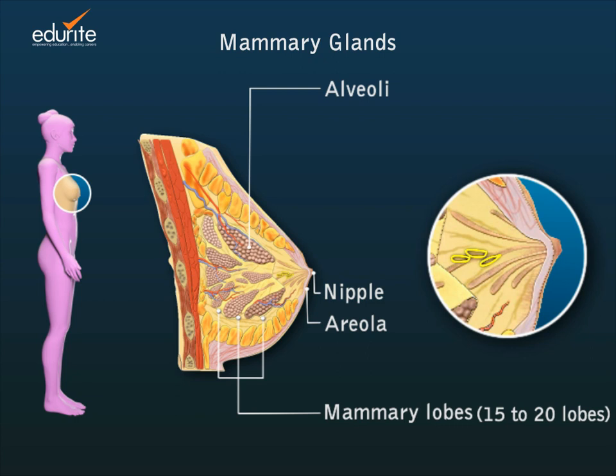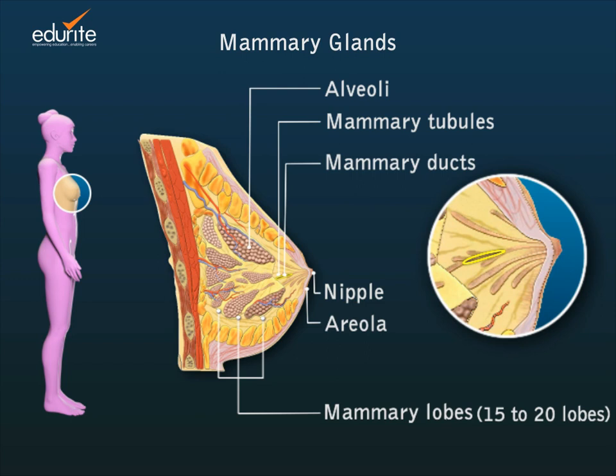The secreted milk passes through the mammary tubules at the end of the alveoli. The tubules of each lobe come together to form the mammary ducts.